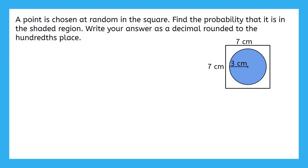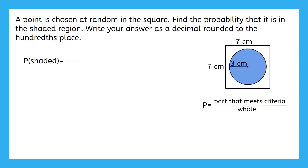A point is chosen at random in the square. Find the probability that it is in the shaded region. Write your answer as a decimal rounded to the nearest hundredths place. Here's the formula we just came up with. The whole figure that we can choose a point on is the area of the square, and the part that meets the criteria of being in the shaded region is the area of the circle.